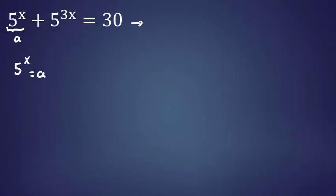5 to the 3x can be written as 5 to the x to the power of 3. So the equation 5^x + (5^x)^3 = 30 becomes a plus a cubed equals 30.